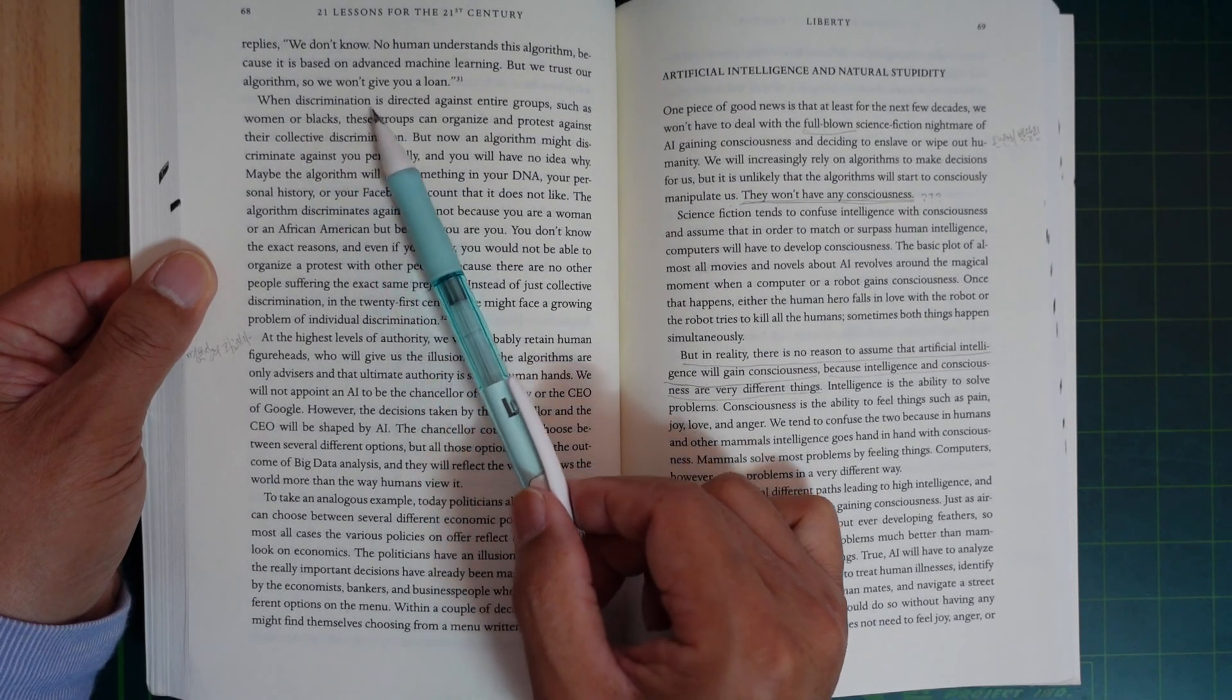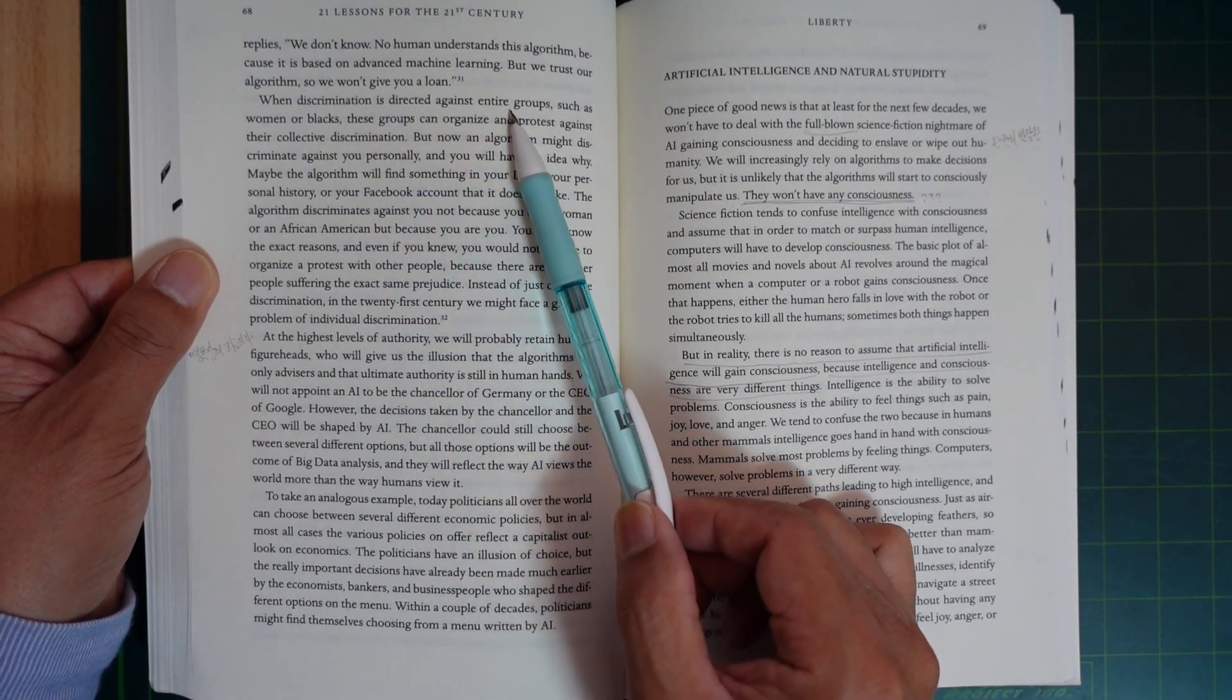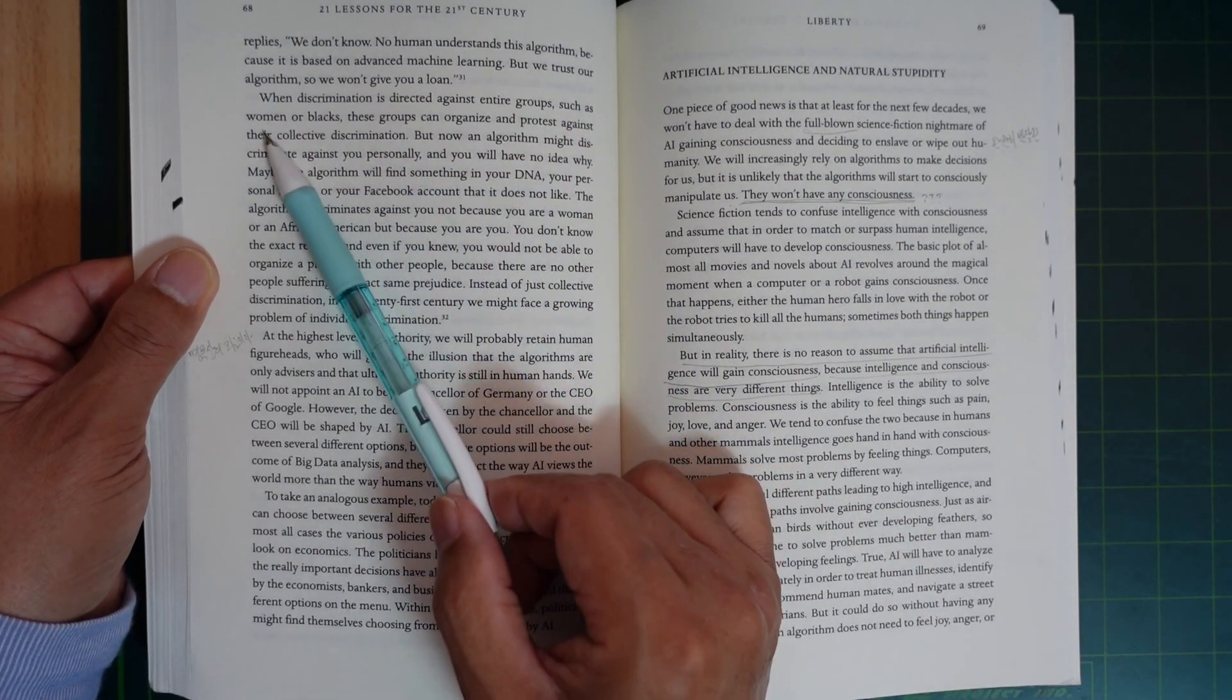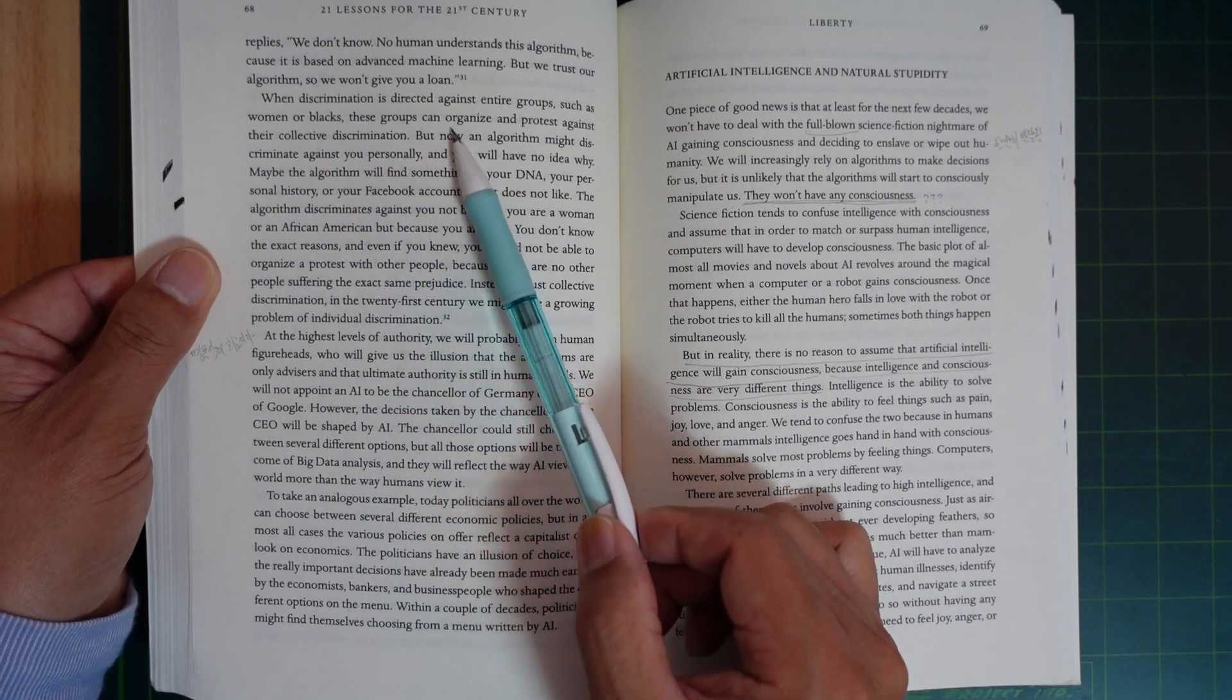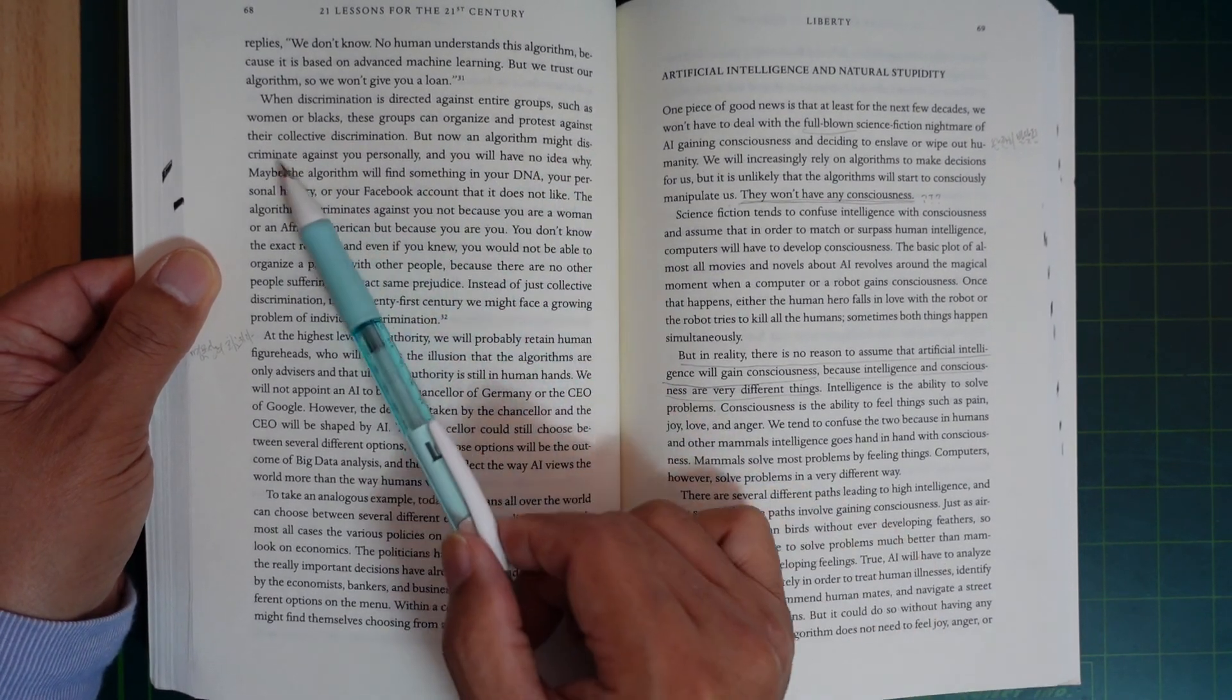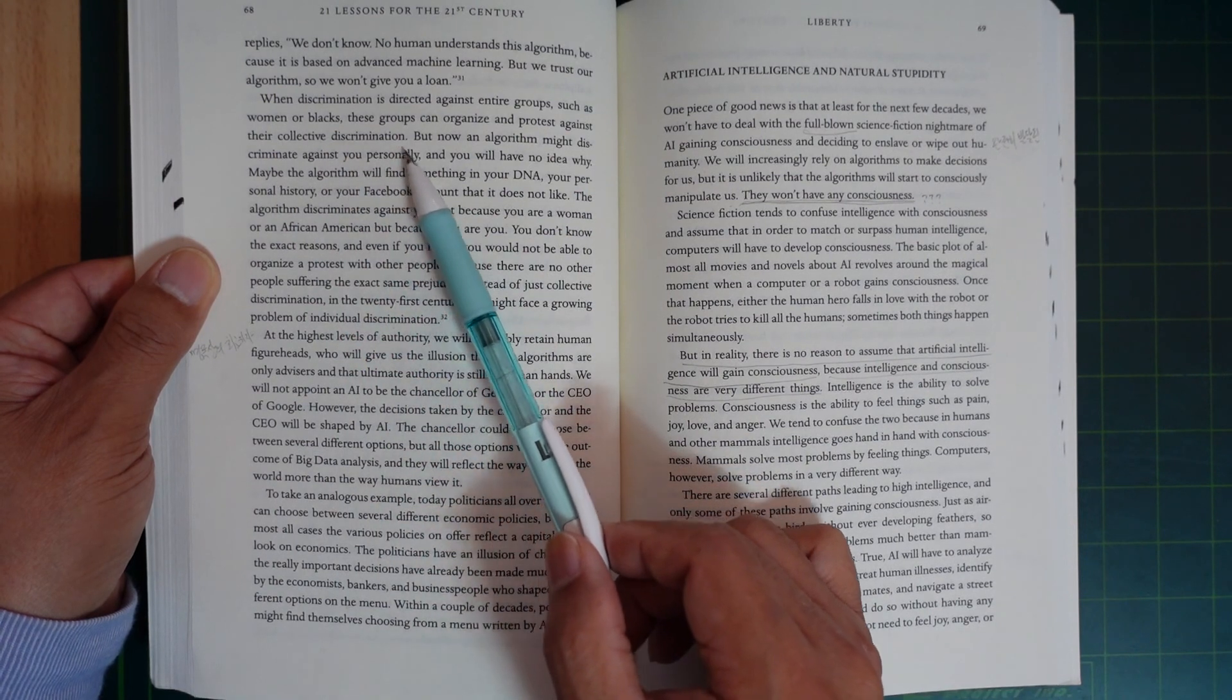When discrimination is directed against entire groups such as women and blacks, those groups can organize and protest against collective discrimination.